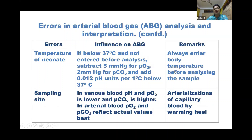Always enter the baby's temperature before analyzing the sample, otherwise there may be errors in blood gas analysis. Regarding sampling site, arterial blood is always preferred because it reflects actual values of oxygen and carbon dioxide. If arterial blood is not possible, capillary blood from the heel should be used, but the heel should be arterialized by warming with a warm tile.